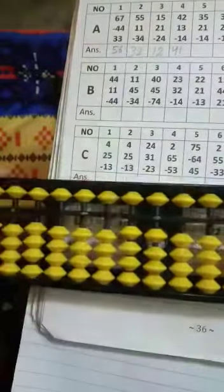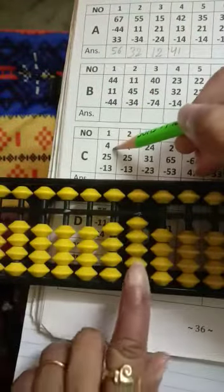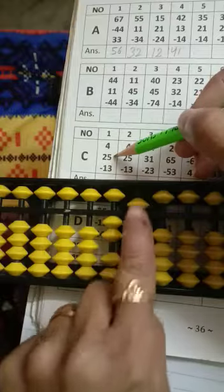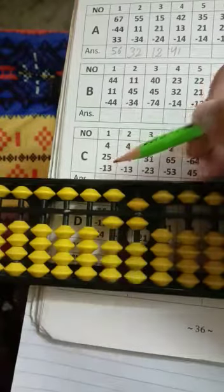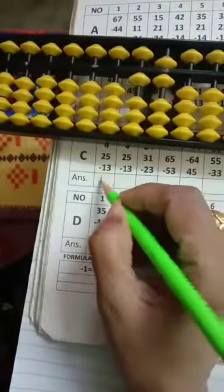Now I am doing some questions of column C. 4, 20, 5, minus 10, minus 3. Answer will be 16. 1, 6.